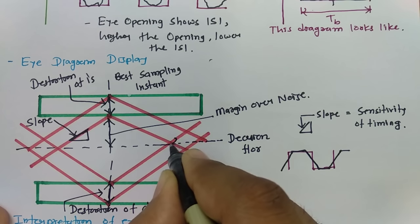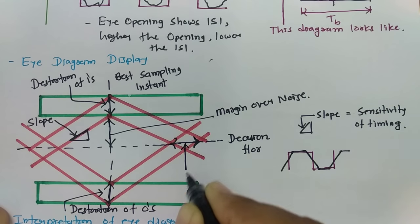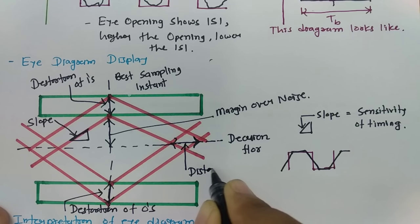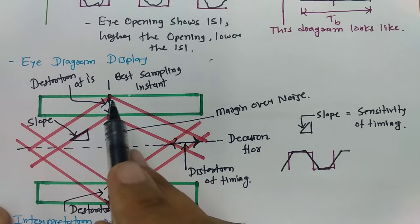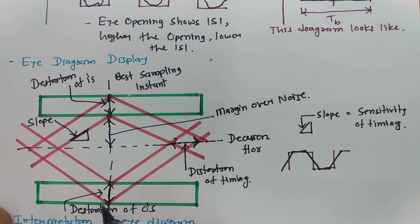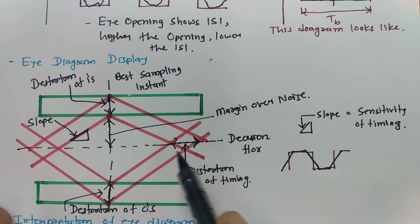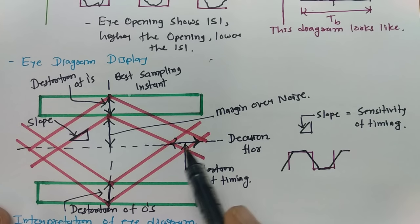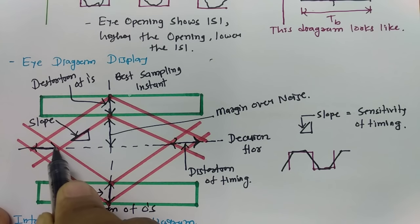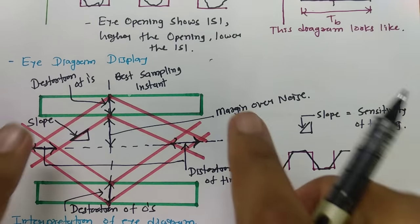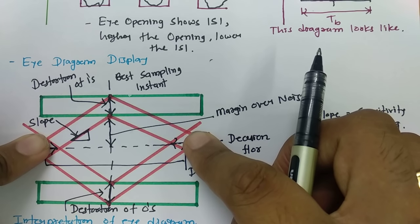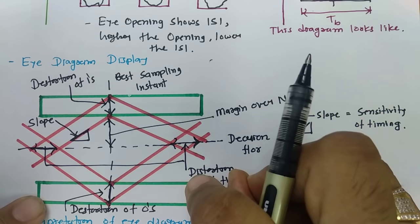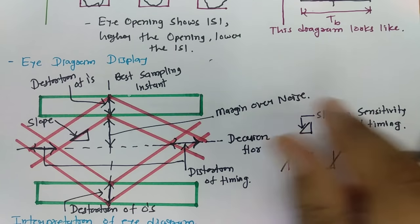The gap in the horizontal spread of the eye shows distortion of timing. You should not take sampling at the edge regions — sampling should be at the maximum eye opening, which is the best sampling instant. If you move away from that instant, the signal becomes distorted. This complete region spans one bit time T_B — the distance between the two vertical lines is one bit timing. These are the parameters that define what the eye diagram is.